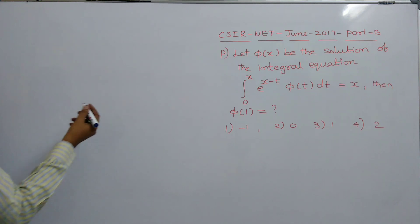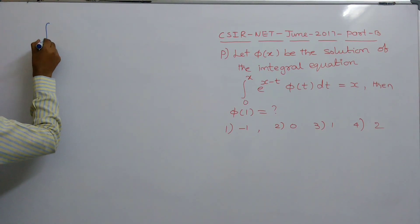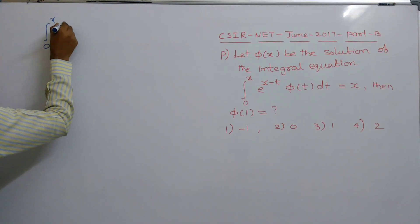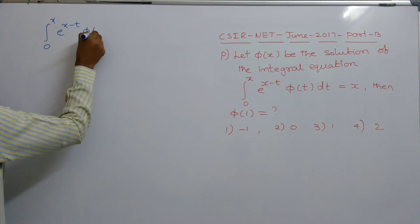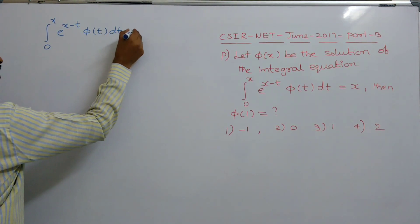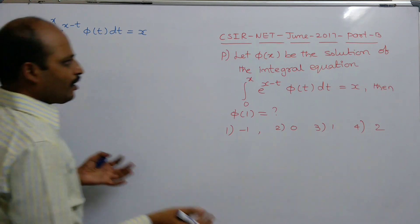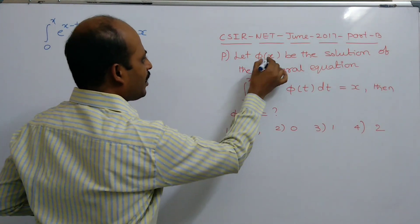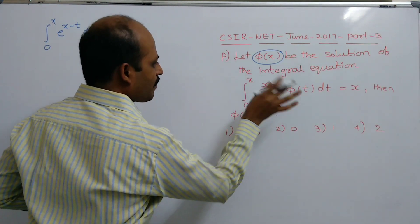And simplest question, given integral equation is integral 0 to x, e power x minus t, φ of t dt equals x. You have to find φ of 1, where φ of x is solution of this integral.